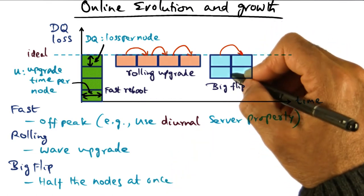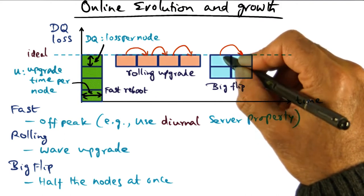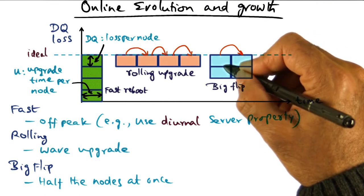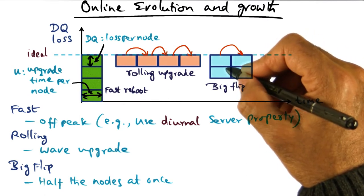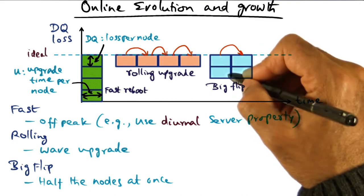So in other words, the service is available at 50% of the full capacity. So you'll see that with the big flip, half the nodes are down. So we've reduced the server capacity, the total DQ available by 50% for U units of time.